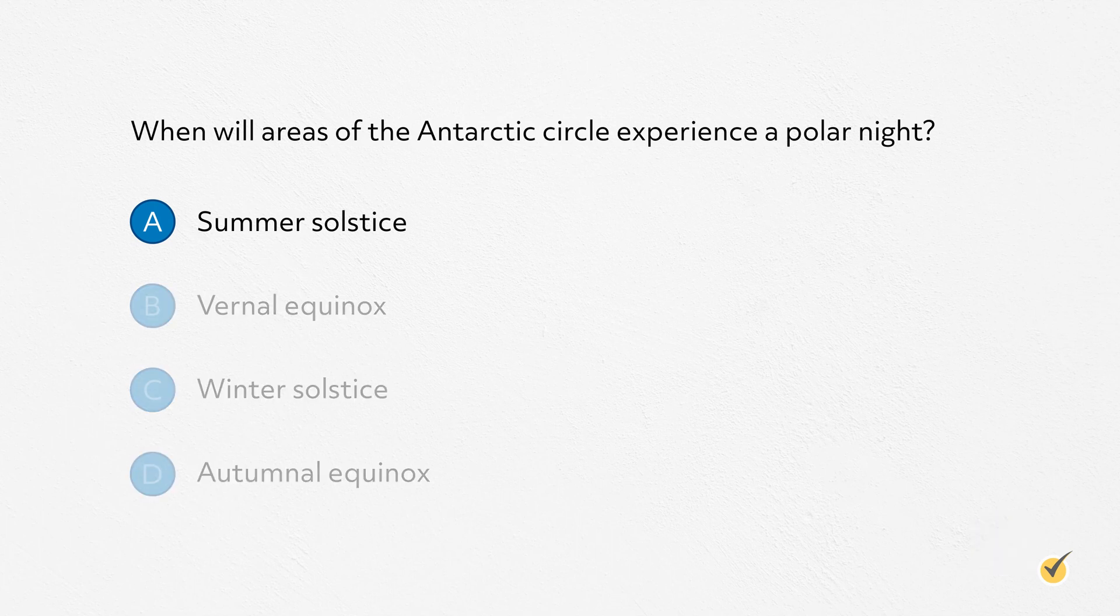The correct answer is A: summer solstice. During the northern hemisphere summer, the Earth is tilted toward the sun so the poor South Pole will receive the least amount of sunlight, some parts in darkness for over 24 hours.